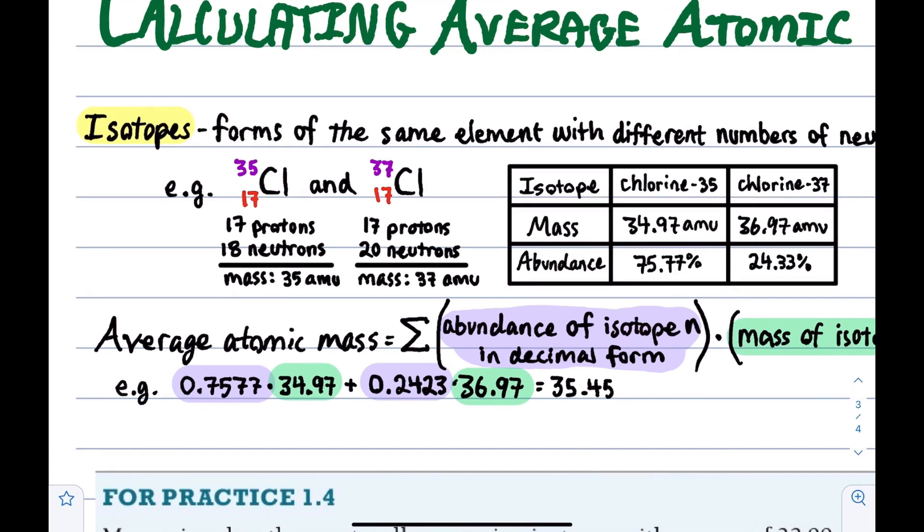One more thing that I want to address before we actually learn how to calculate average atomic mass as a weighted average, is that in this table that I've given you with chlorine as an example, I pulled this from my textbook, and you might be surprised to see that there is a row for mass, and that it has decimal numbers. Because so far, you've probably learned the average atomic mass is a decimal because it's an average, but the individual atomic masses of isotopes are just whole numbers because a proton is 1 amu, and a neutron is 1 amu. So if you add up protons and neutrons, you get a whole number, right?